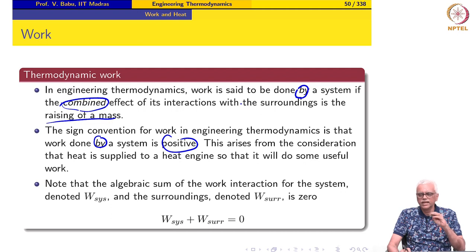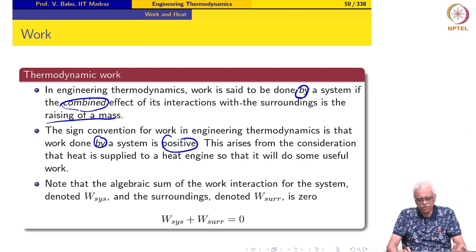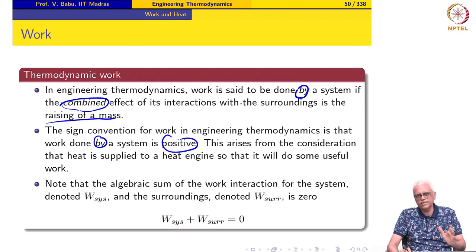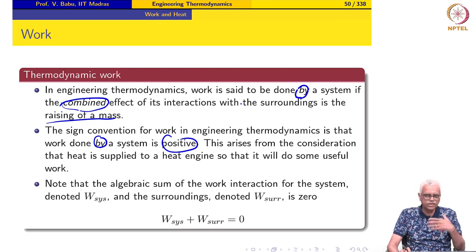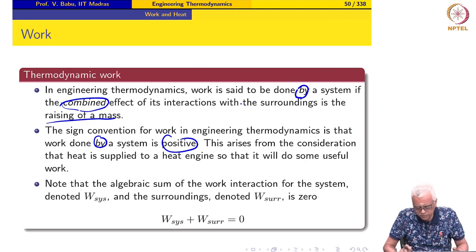The best way to express this is to say 'work interaction for the system is plus 10 kilojoules' or 'work interaction for the system is minus 10 kilojoules.' In this way there is no ambiguity: a positive number implies work is done by the system, and a negative number implies work is done on the system. This is preferred over saying 'work done by' or 'work done on.'